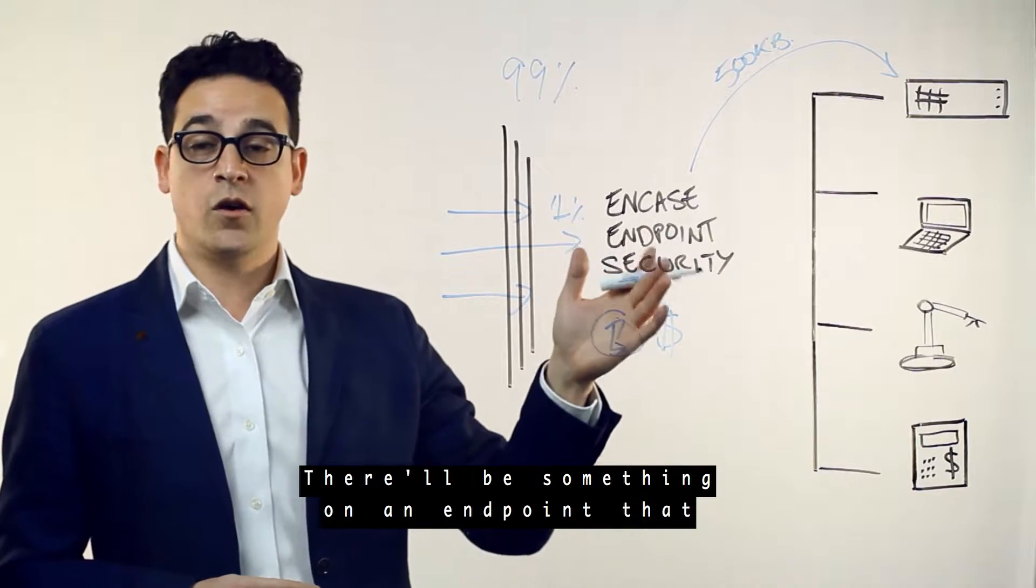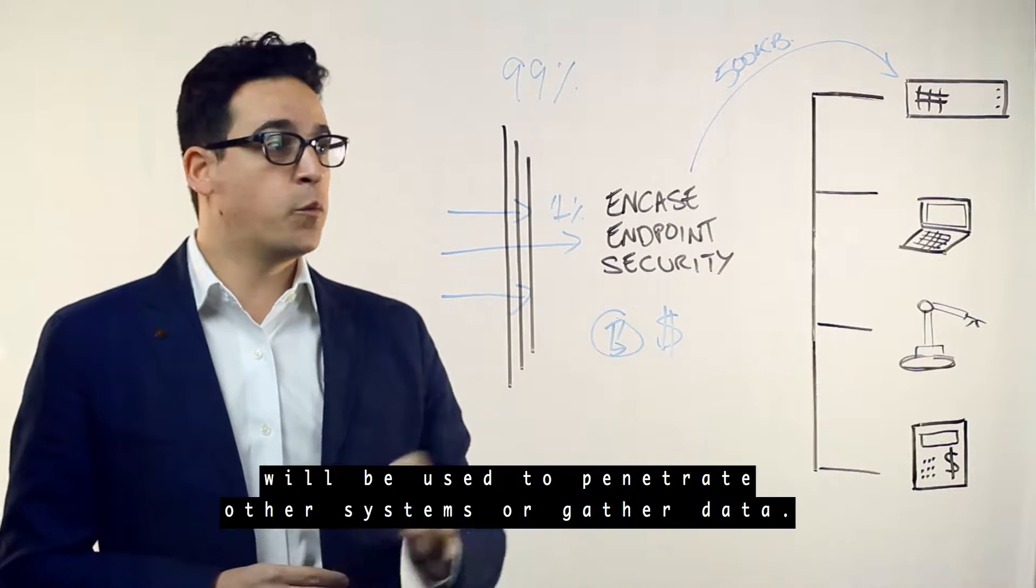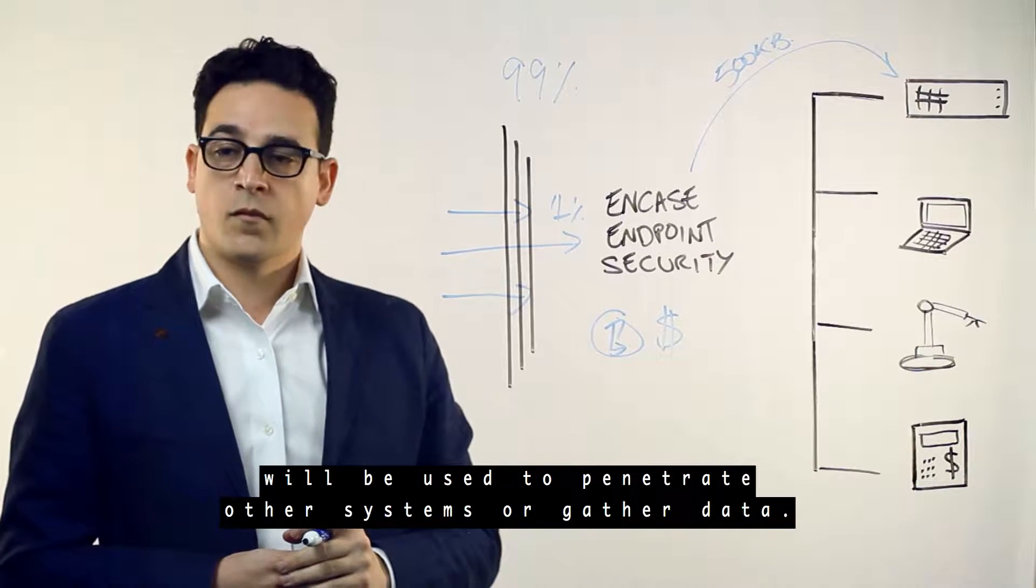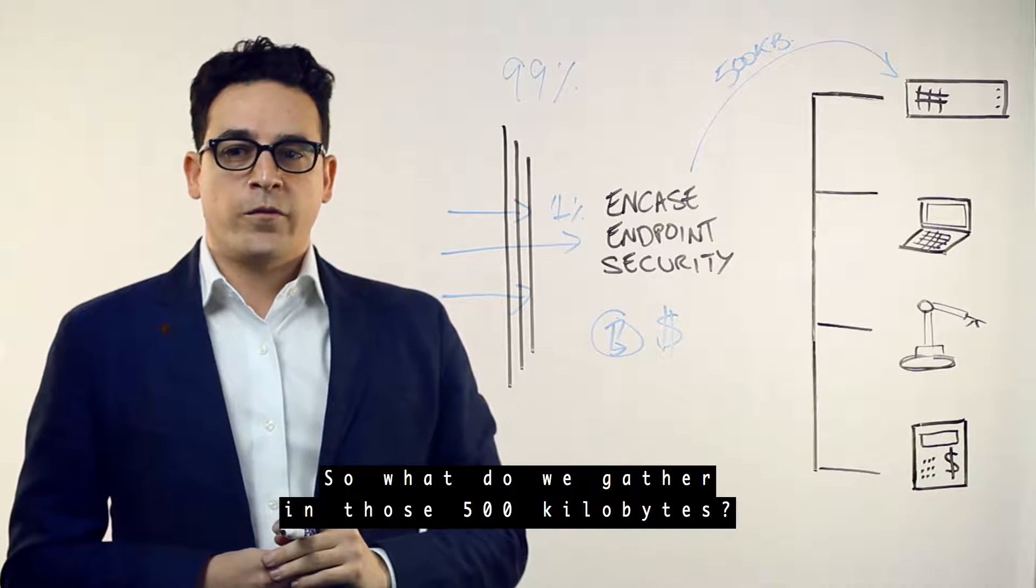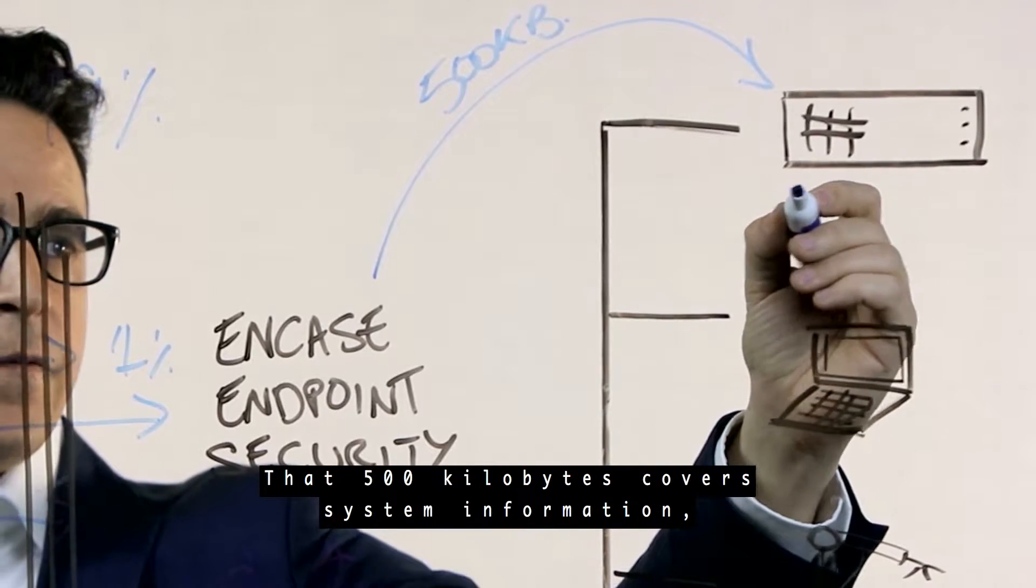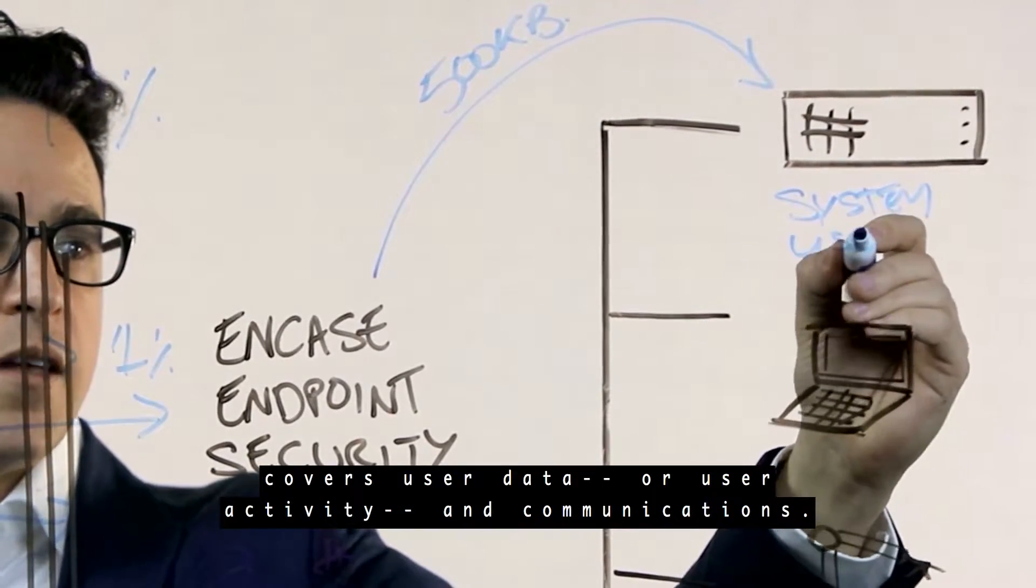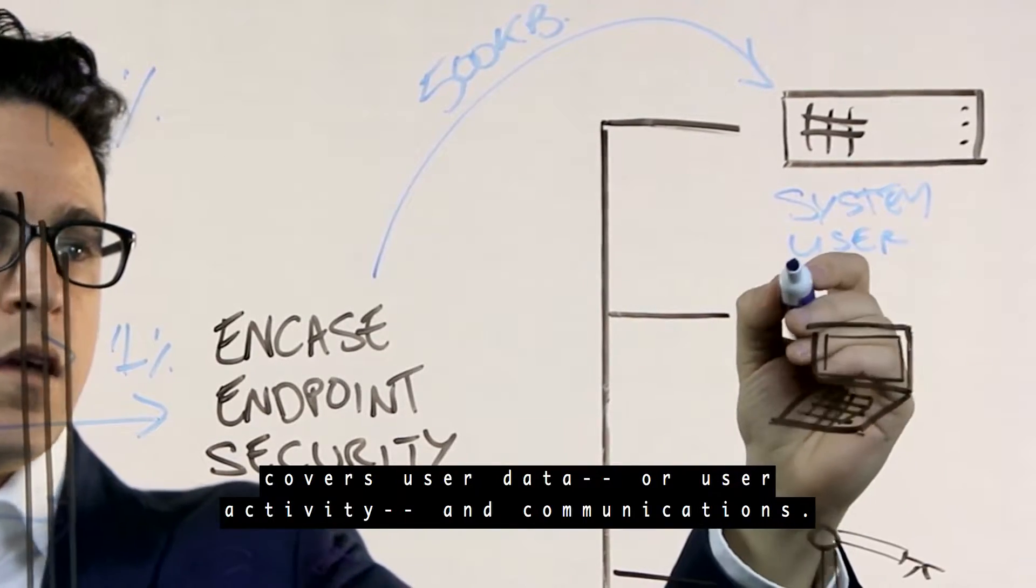There will be something on an endpoint that will be used to penetrate other systems or gather data. So what do we gather in those 500 kilobytes? That 500 kilobytes covers system information, user data or user activity, and communications.